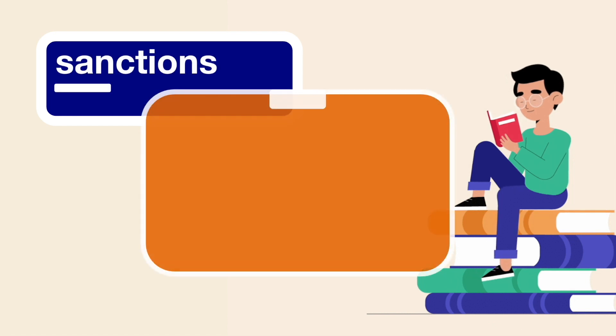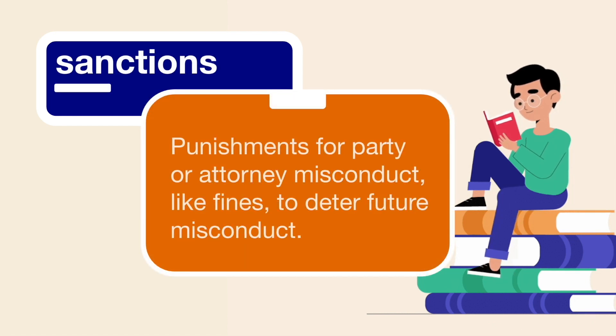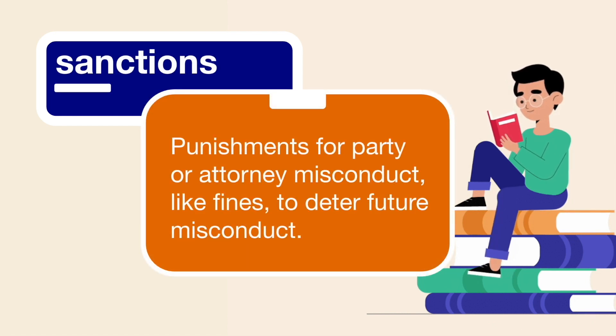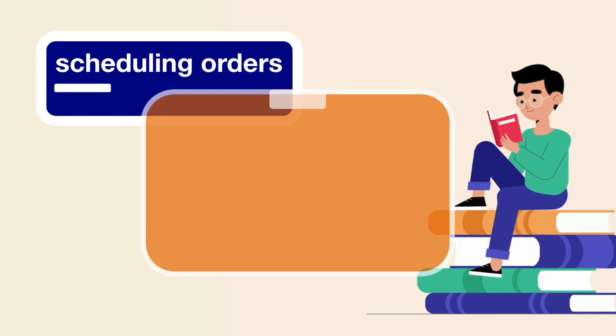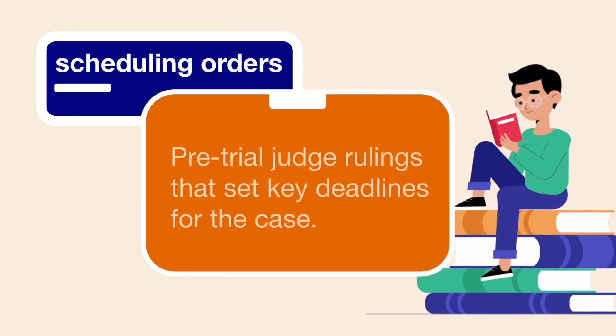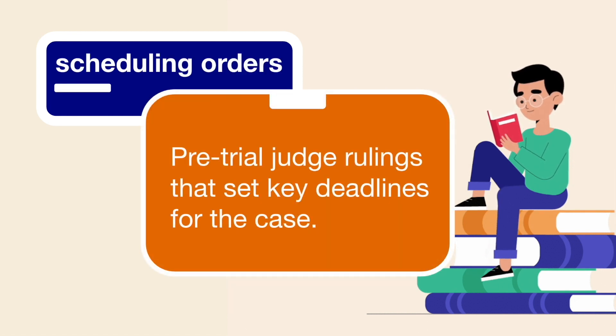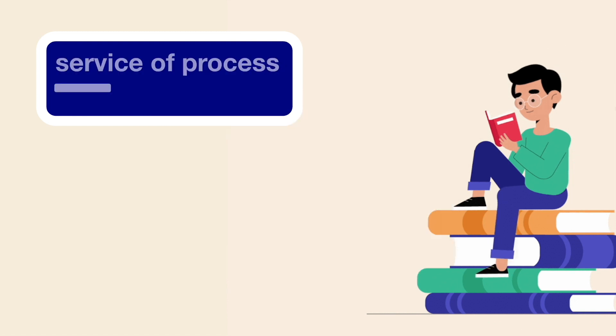Sanctions: punishments for party or attorney misconduct, like fines, to deter future misconduct. Scheduling orders: pre-trial judge rulings that set key deadlines for the case.